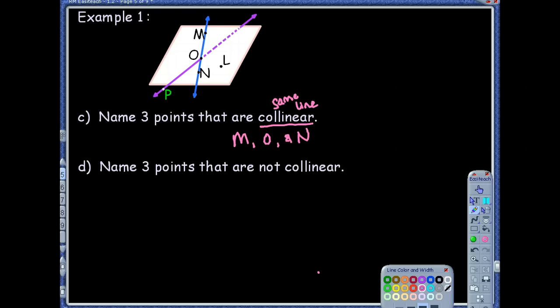Absolutely. Okay, so then what about three points that are not on the same line, not collinear? Okay, so what about P, O, and N?